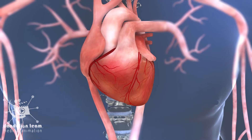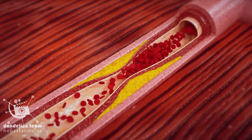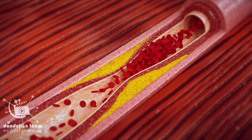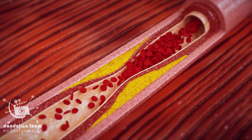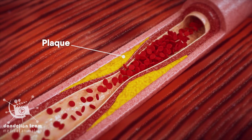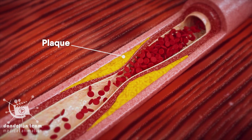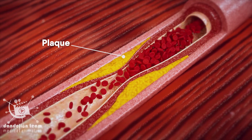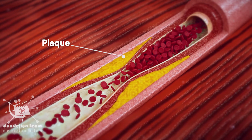Coronary artery disease is caused by plaque buildup in the wall of the coronary arteries. Plaque is made up of cholesterol deposits that cause the inside of the arteries to narrow over time.